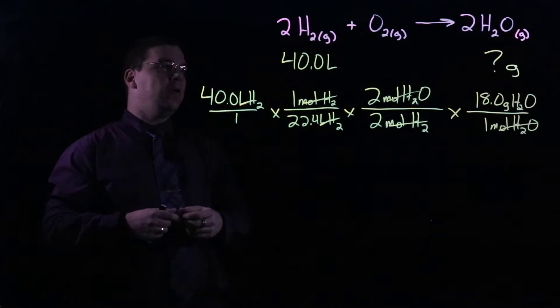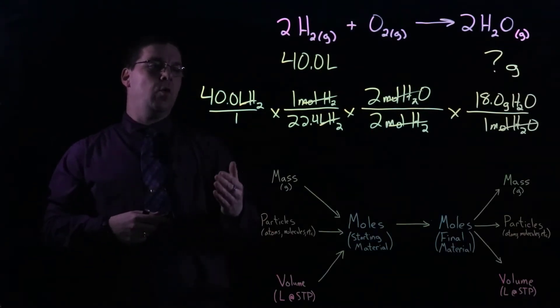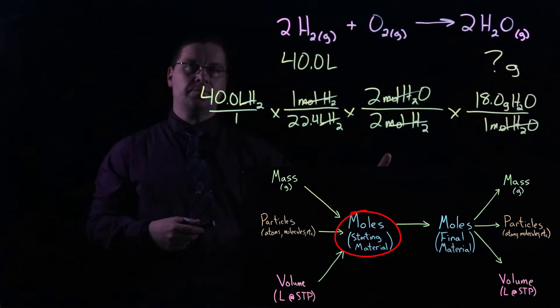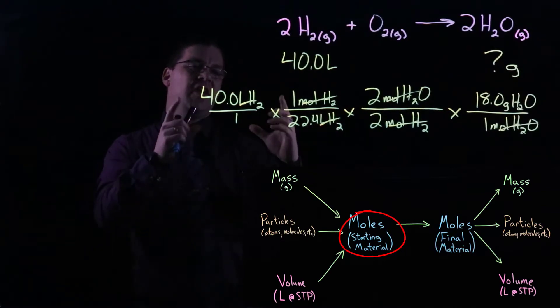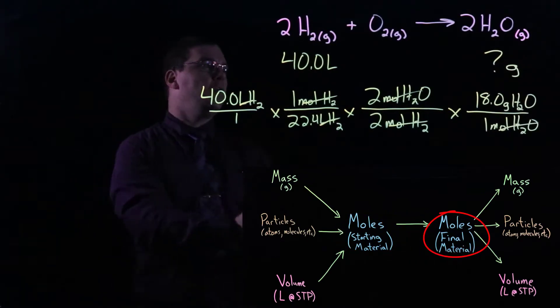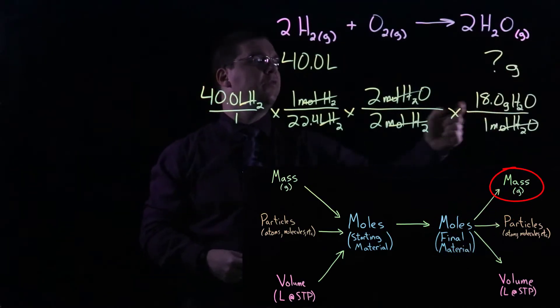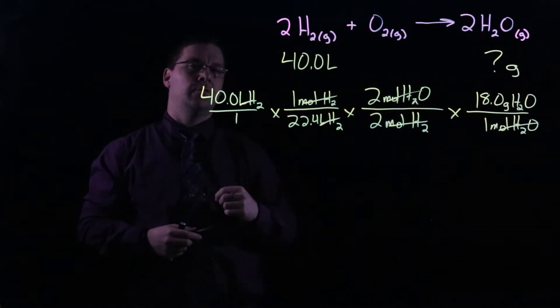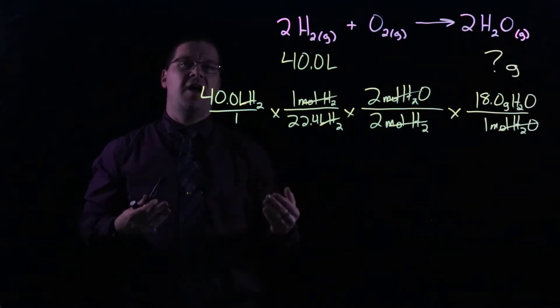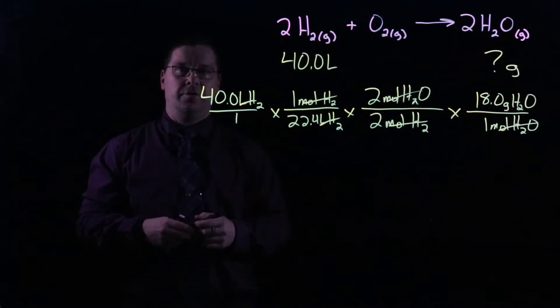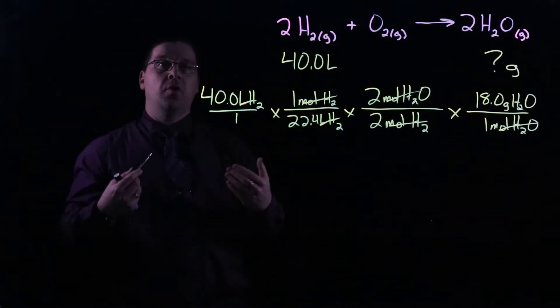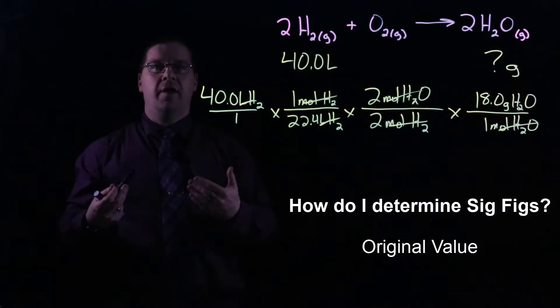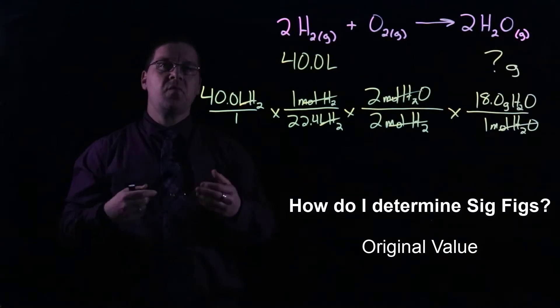And we can see that the moles of water cancel out. So now we have worked our way from our initial amount. We've gone through and used a series of equivalent values, conversion factors, to take this initial quantity and convert it to what it would be equivalent to in grams of water. So all that remains now to do with our stoichiometry is multiply our numerators, multiply your denominators, and then divide the two and come up with your answer. Now, when you do the math in terms of sig figs, the initial value, we always consider that. That's considered a measurement, and it has some level of uncertainty built into it.